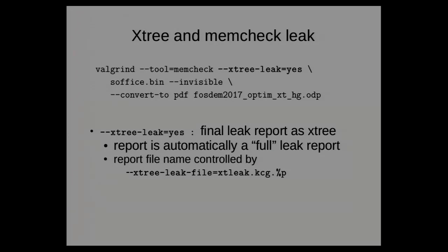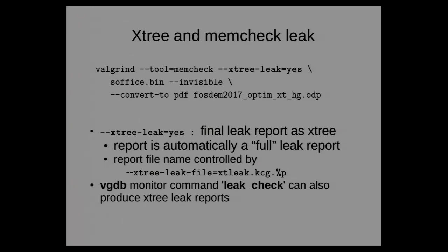This feature is in SVN — you can extract the sources from the SVN repository. Documentation is done but there are no regression tests yet. Similarly to using vgdb to dump the memory state, you can use vgdb to send a command to an application running under memcheck to produce a leak check at various moments. Memcheck can produce incremental leak reports, showing the delta between the previous leak search and the current one.